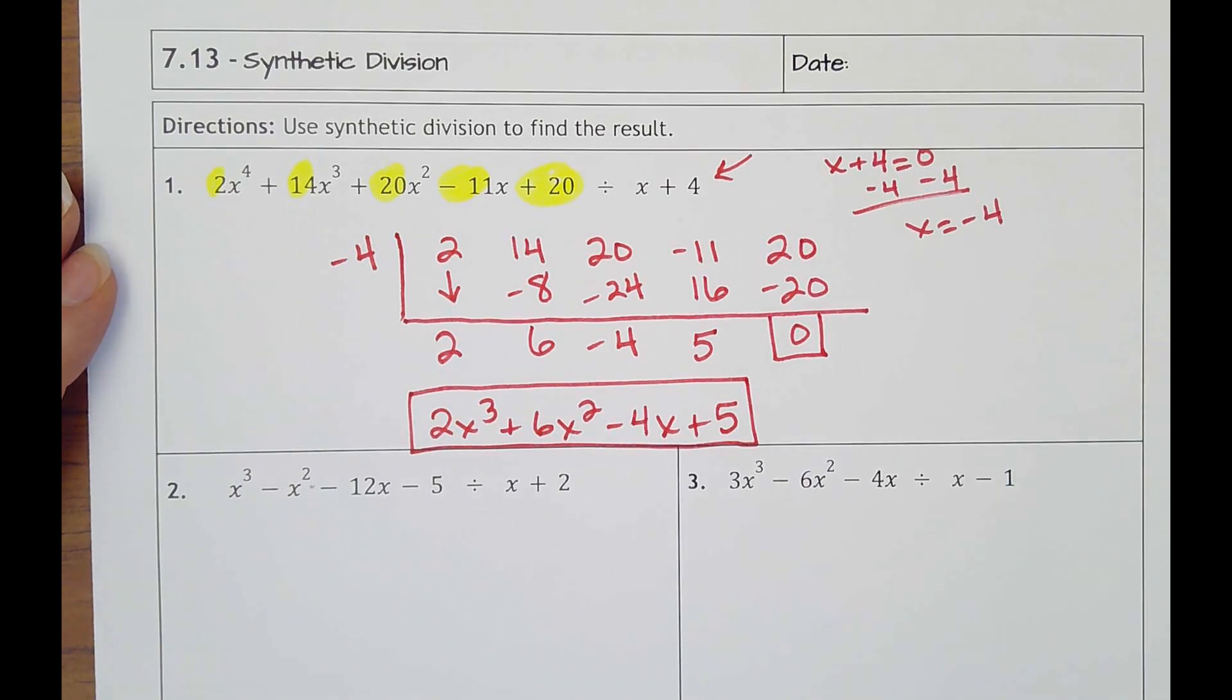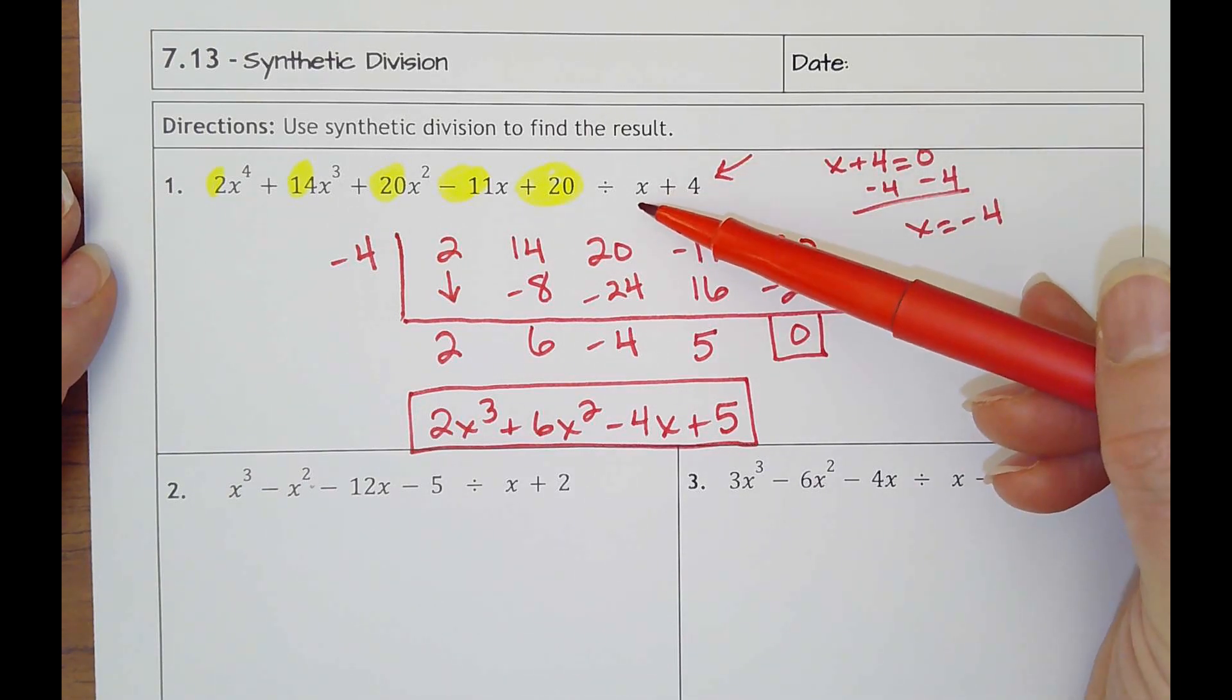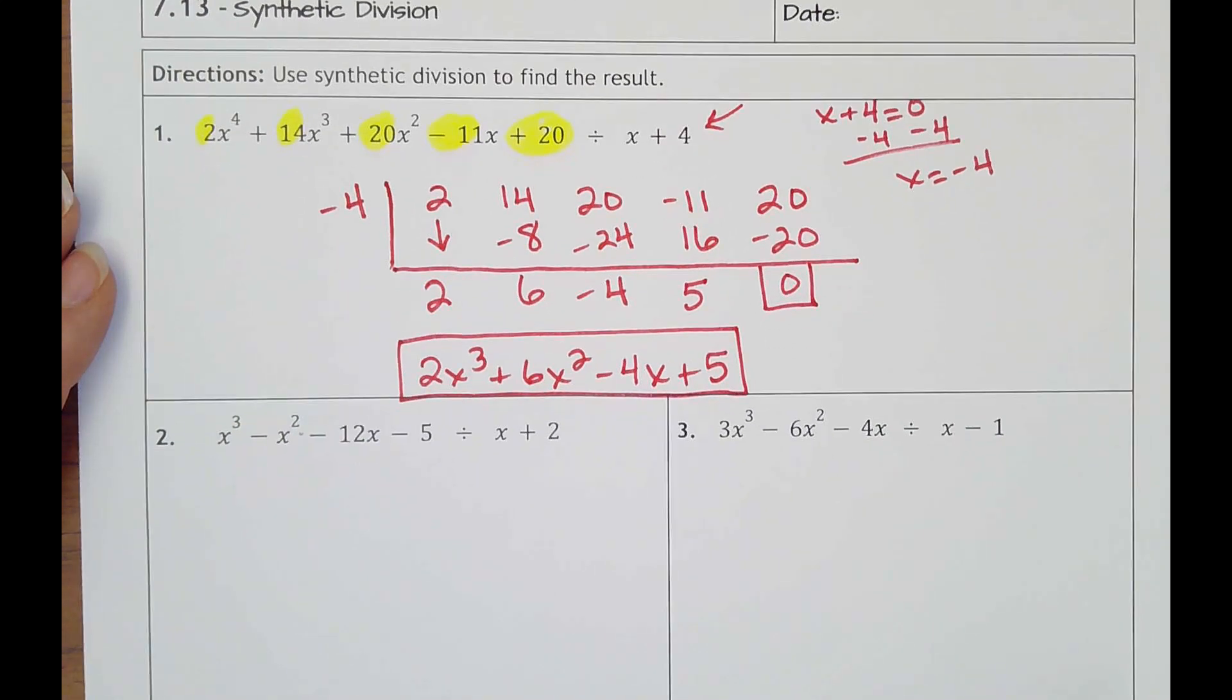So another method to do long division - instead of long division we're doing this. But it doesn't work every time. It only works if you have just a single x. So if this were like a 2x plus 4, it's not going to let you have a fraction out here, so that's why it has its limitations.